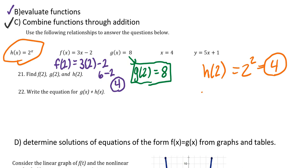Number 22 is fulfilling objective C: combine functions through addition. It says write the equation for g of x plus h of x. So g of x is 8, h of x is 2 to the x, so g of x plus h of x would be 8 plus 2 to the x. We can't simplify that any further because there are no like terms to be combined.